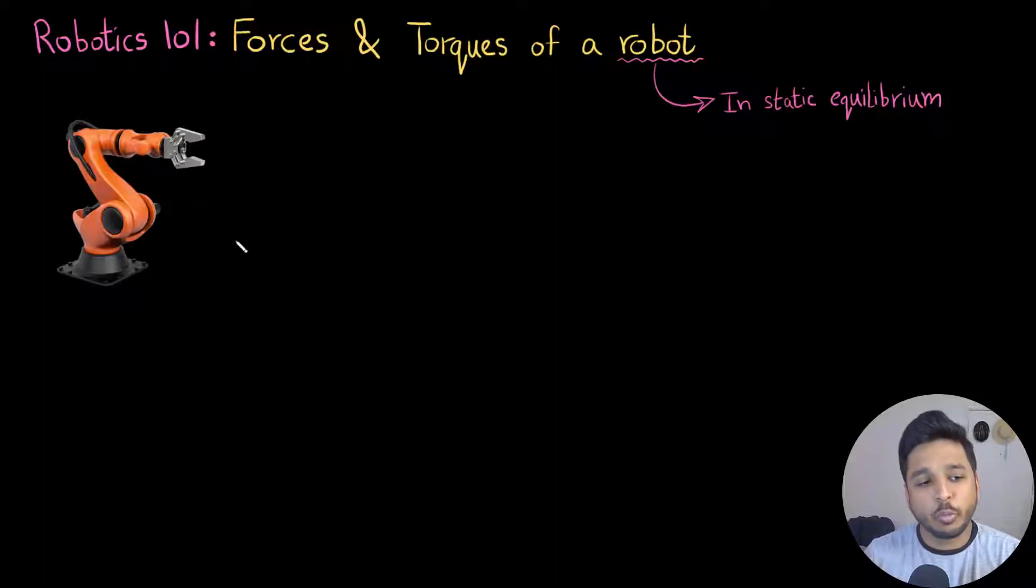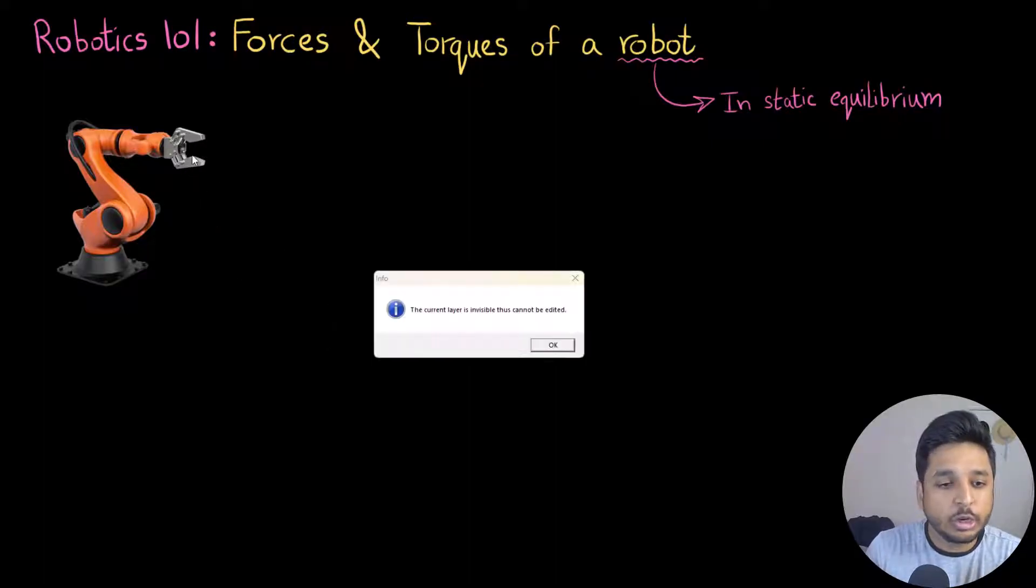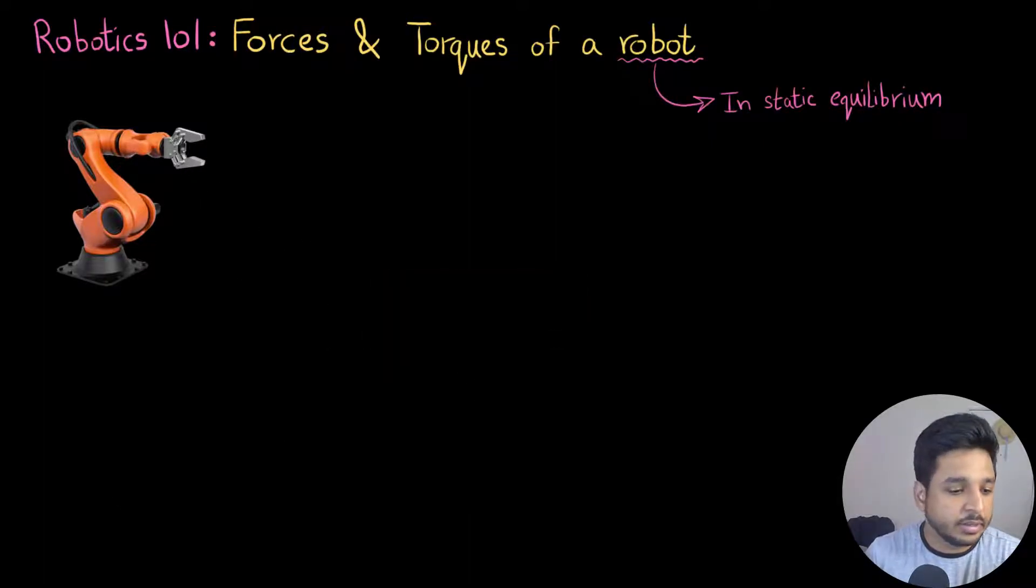Let's say if I have a robot here and it is holding an object, let's say it is holding a box or a book and it is just standing there. So that is when the robot is said to be in static equilibrium.